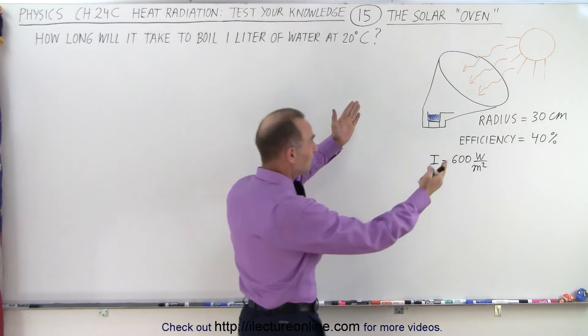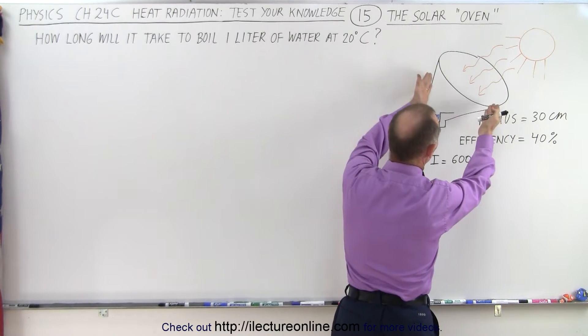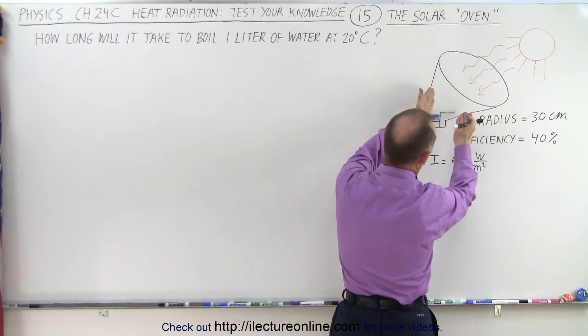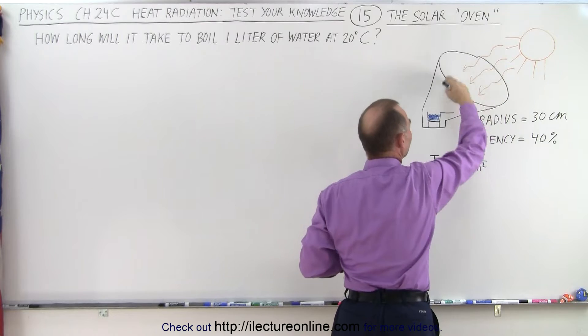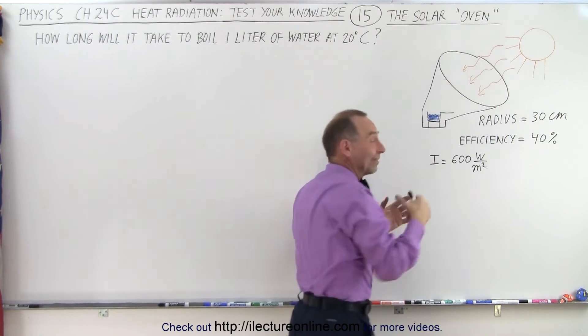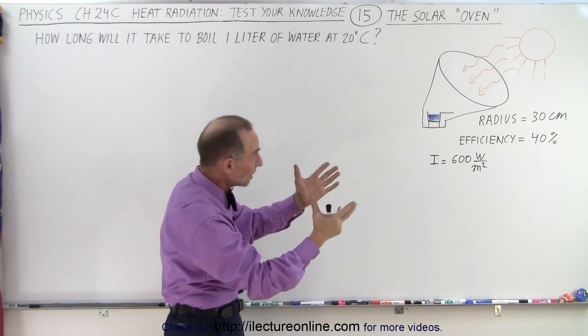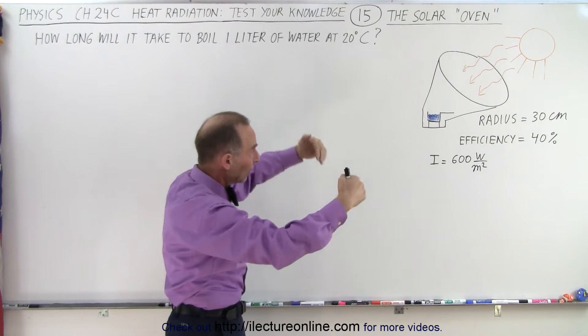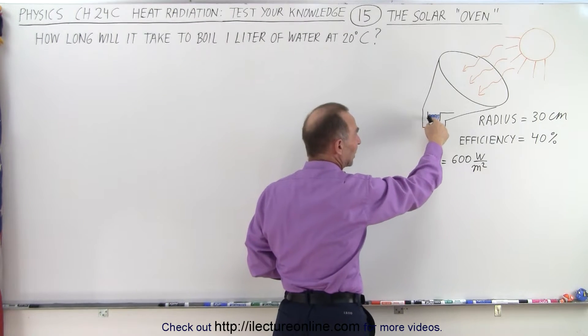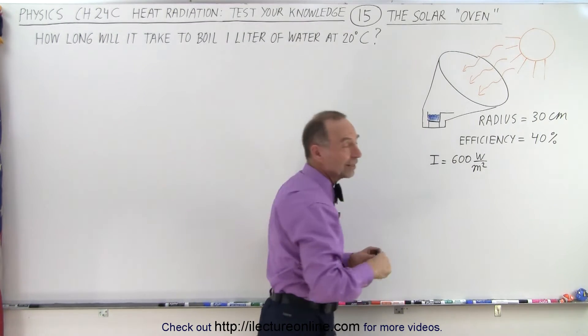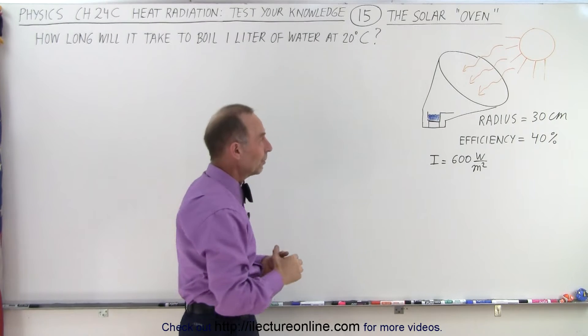So how this works is we have a big metal contraption that is kind of in the shape of a cone. It is silvery inside, so the sunlight that hits the inside of that cone-shaped region will be reflected towards the pot at the bottom here where there's some water in there and we're trying to boil the water in the pot.